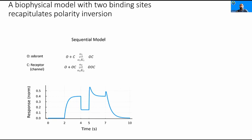All of these data suggest that this phenomenon could be mediated by the receptor, and the receptor could have multiple binding sites. One binding site could be activating the neuron; the other binding site could be inhibiting the neuron. We built a model in which the odor first binds to the channel and activates the neuron, and only after this, the odor can bind a second time and inhibit the neuron. When we simulated this model, it was able to recapitulate all properties of the inversion — inhibition during the foreground and rebound at the offsets of both foreground and background. This data and the model suggest the inversion is happening at the receptor level with multiple binding sites.